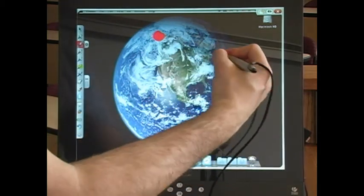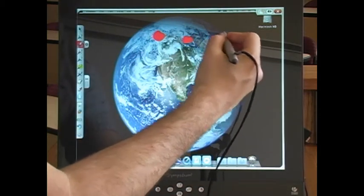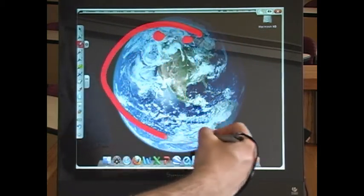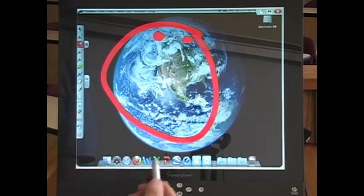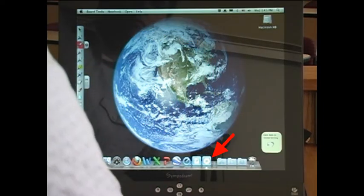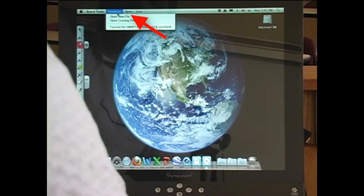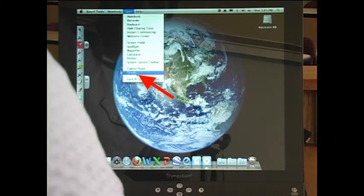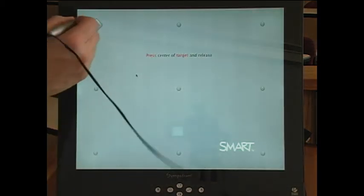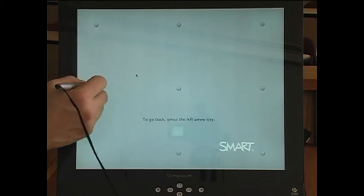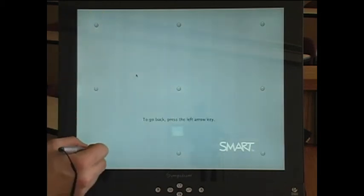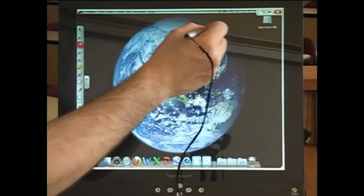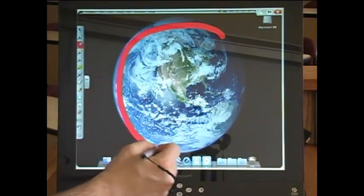Sometimes the smart stylus gets out of alignment. When this happens the ink will appear some distance away from where you are actually writing. In that case use orient to realign it. With board tools on go to open orient. Tap the screen once with the stylus on each dot as it is targeted. Orient will exit automatically when you click the last dot. Now the stylus should write exactly where you expect it to.